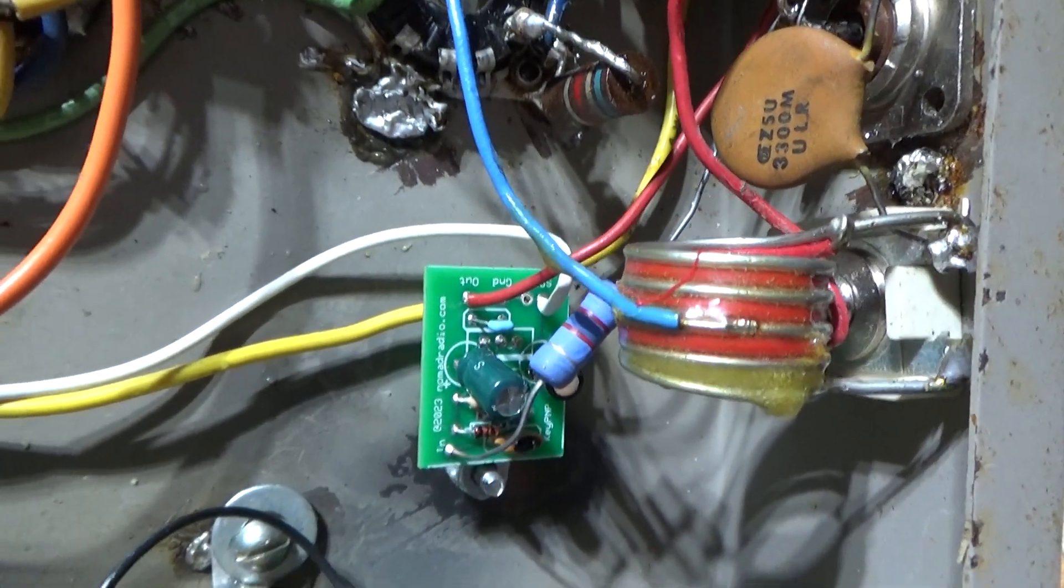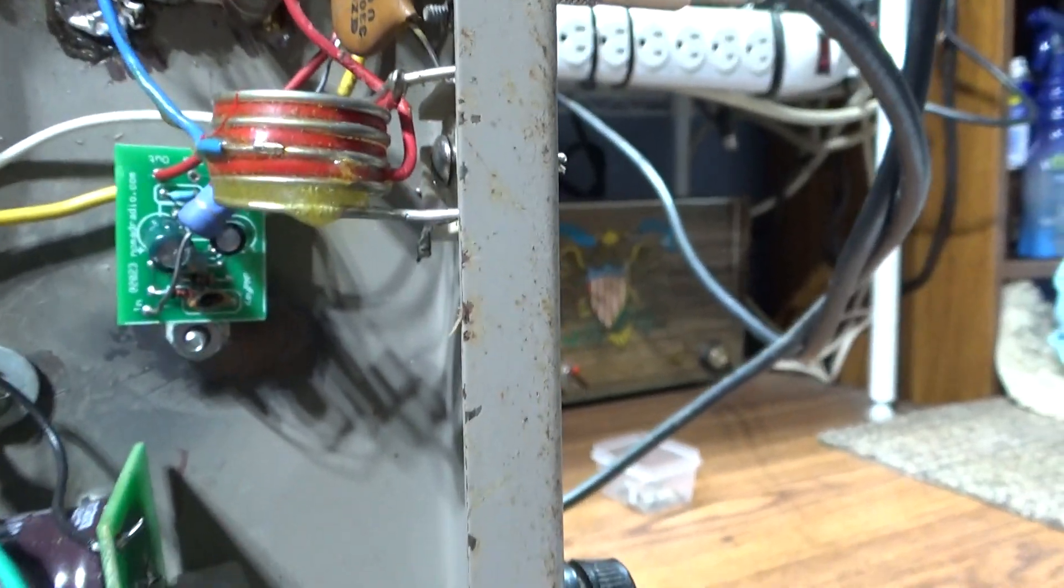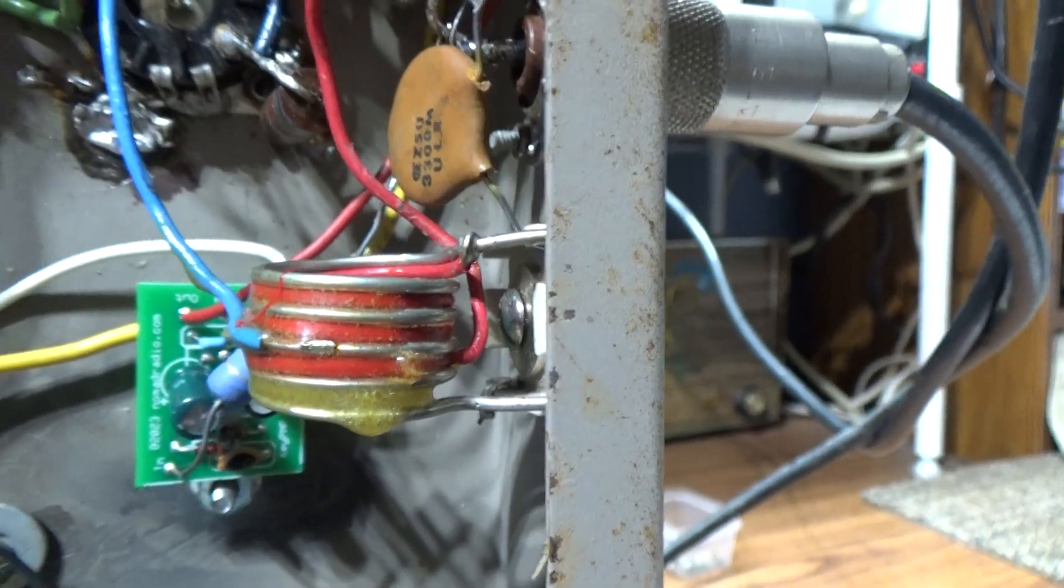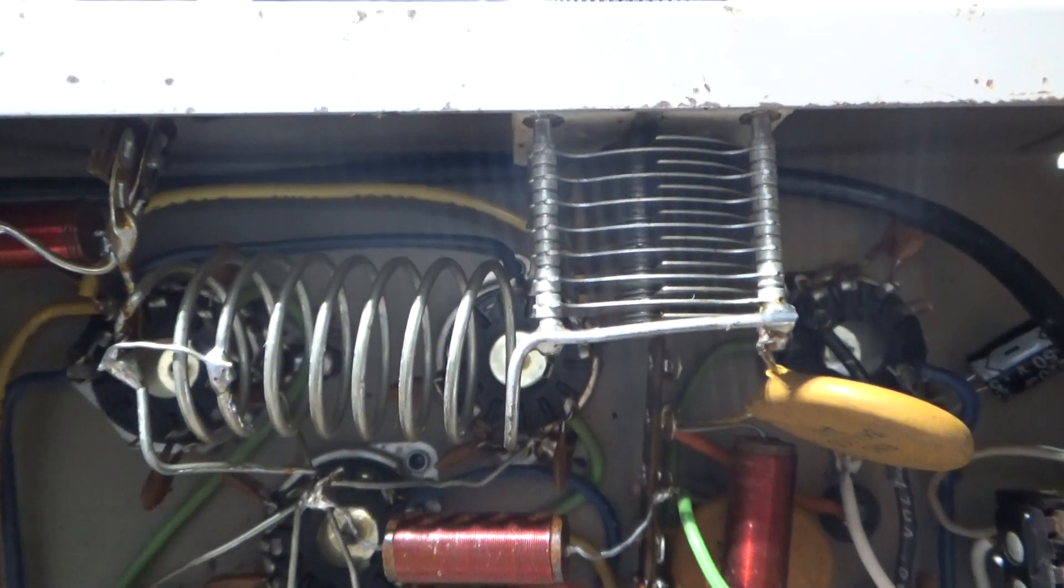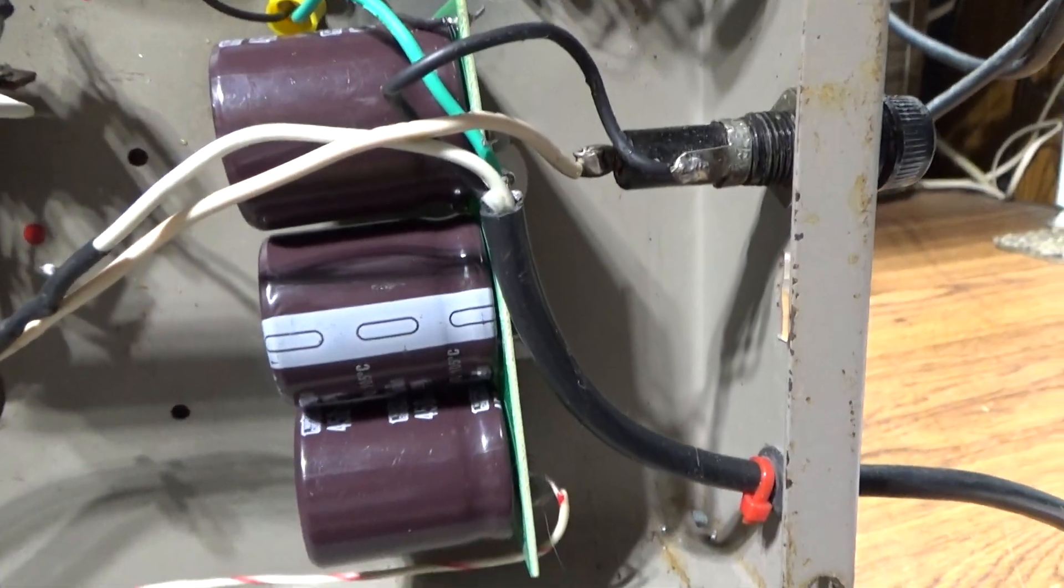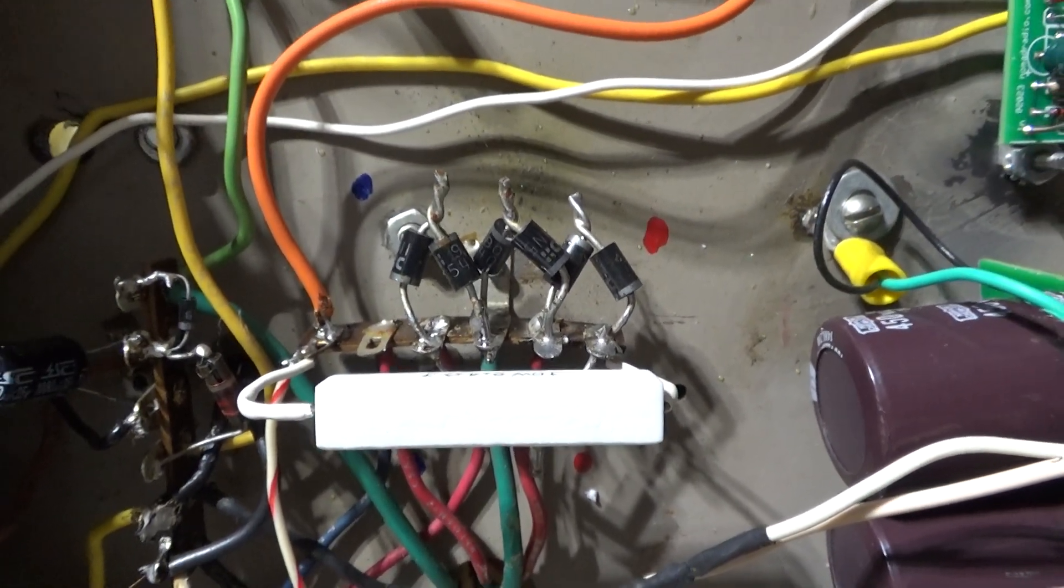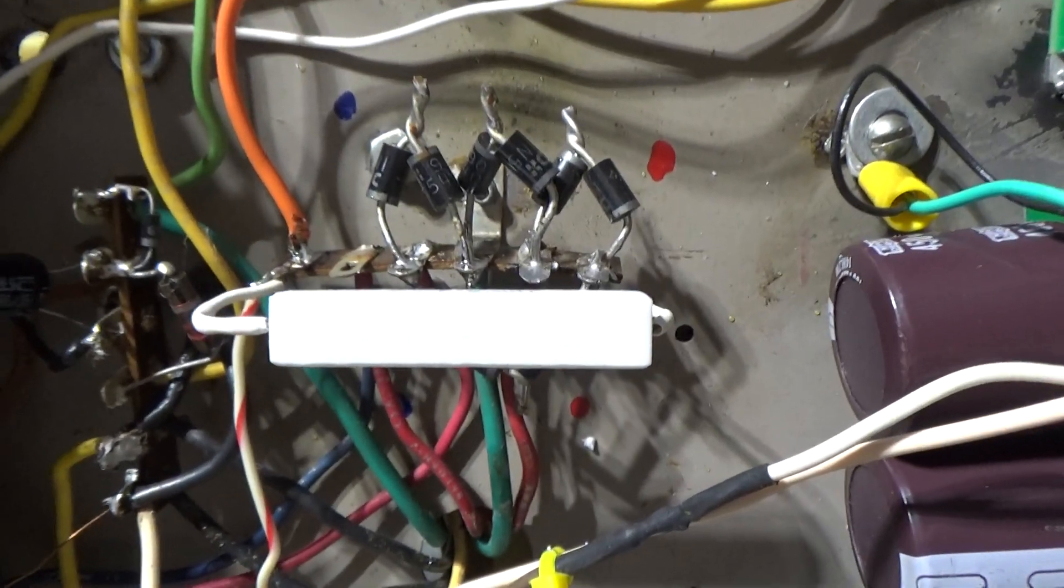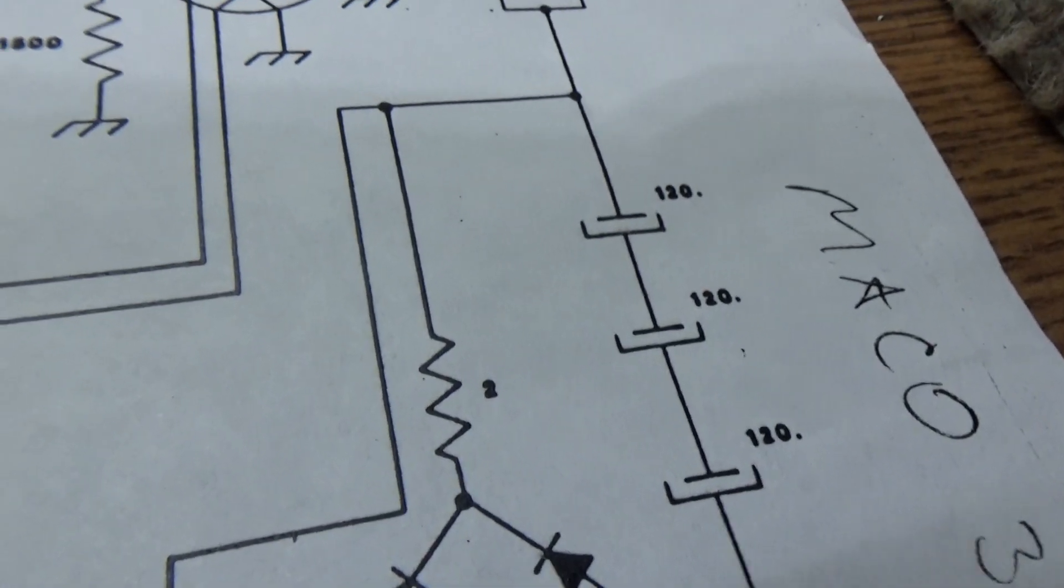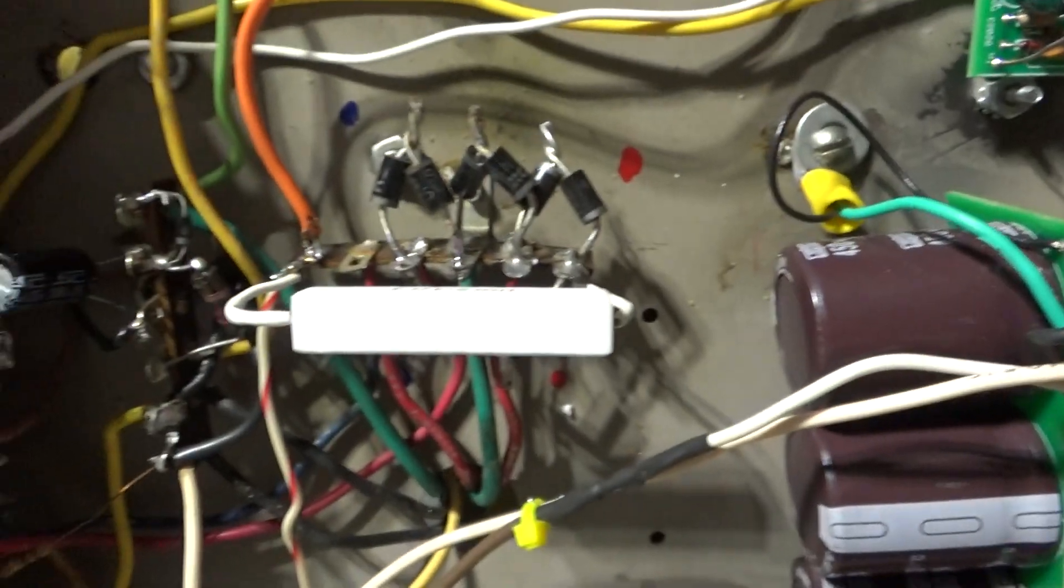It's a basic grounded grid amp. That's the input tuner, then that's the driver tuner, and then that's the tune and load for the output. Full-wave bridge power supply, power supply capacitors. Originally this calls for a surge resistor in the schematics - that 2-ohm resistor right there on top of the diodes - and that wasn't in there.